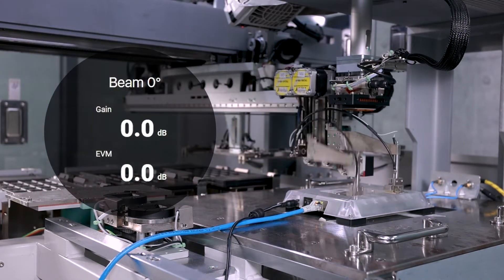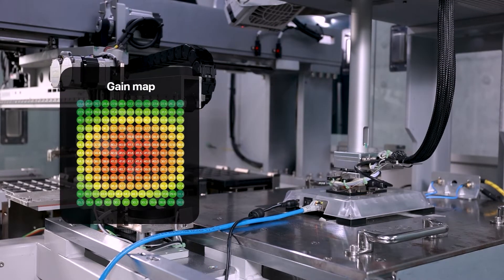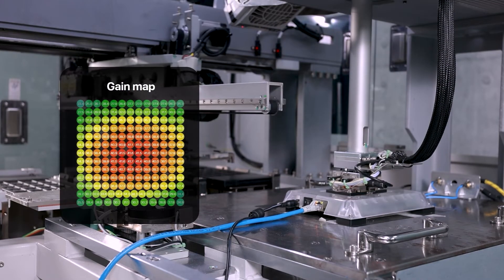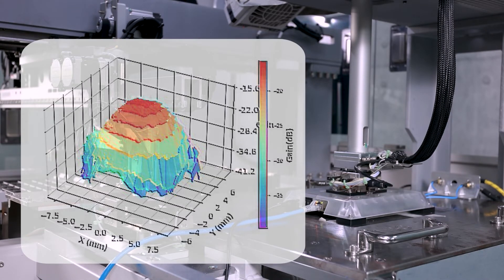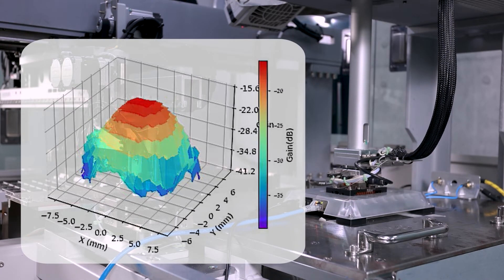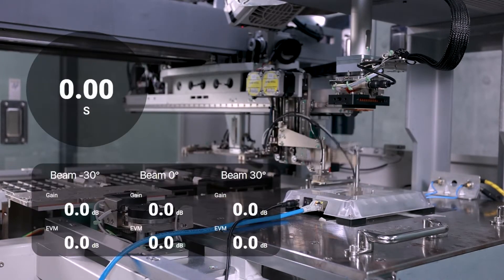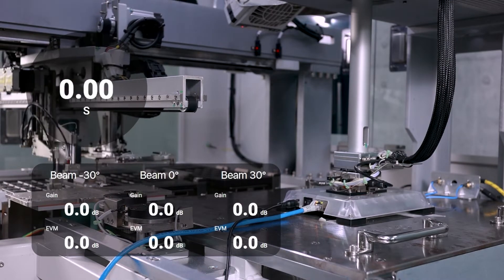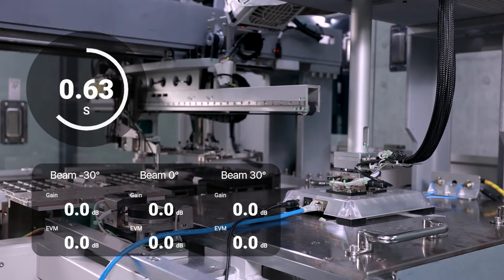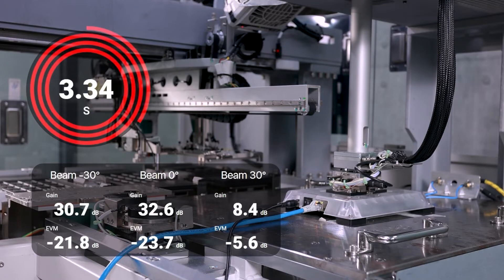Another solution we have is the MMWatson software. It can show the gain map or EVM map in a GUI. With this valuable data, it will be very helpful for the production line engineer to identify faulty DUTs. The MMWatson also works with many commercial analyzers, which makes it easy to integrate into your ATE system.